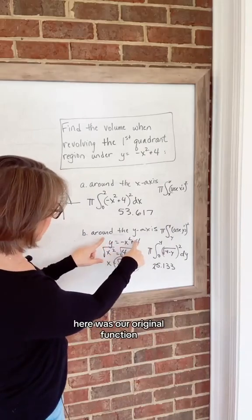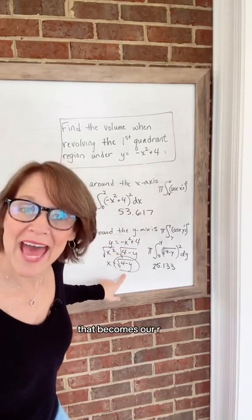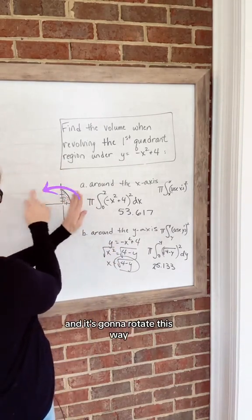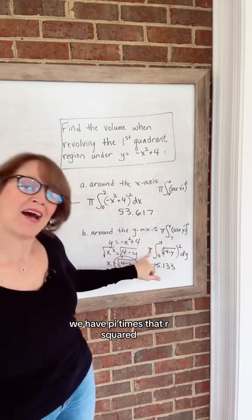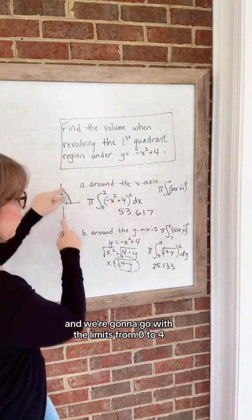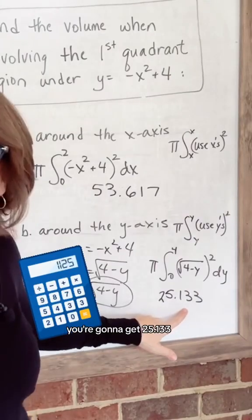Here was our original function. Here it is solved for the x value. That becomes our r. And so this is the radius, and it's going to rotate this way. We have π times that r squared, and we are going to go with the limits from 0 to 4. You're going to get 25.133.